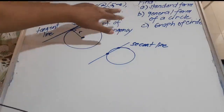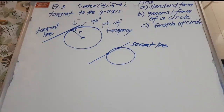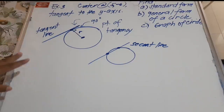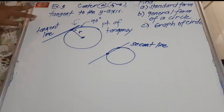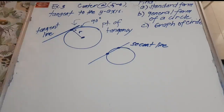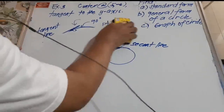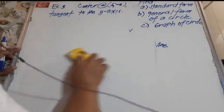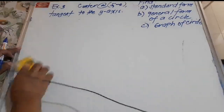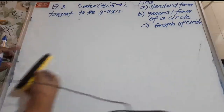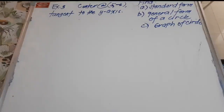How do we get the standard form and general form? We need to know the center and the length of the radius. We cannot yet get the standard and general equations because we don't have the length of the radius. So let's make an illustration first to see what it looks like when the circle is tangent to the y-axis.